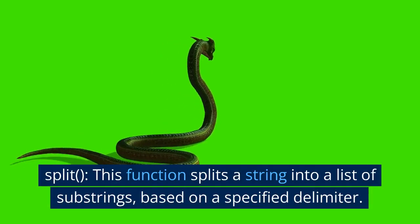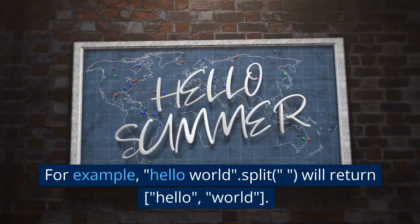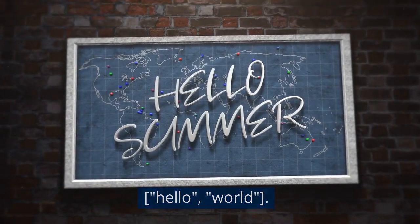split() - This function splits a string into a list of substrings based on a specified delimiter. For example, "Hello, World!".split() will return ['Hello', 'World'].